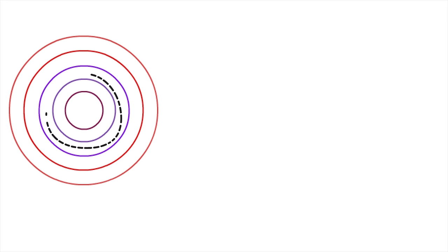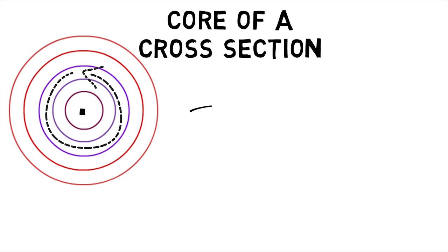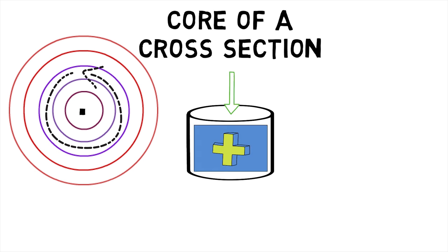A region around the centre of gravity of the cross-section of a rod, the core of a cross-section has the property that a longitudinal force applied to any point of the core causes a stress of one sign in the section. The shape and size of the core of a cross-section are specified by the shape and size of the rod.